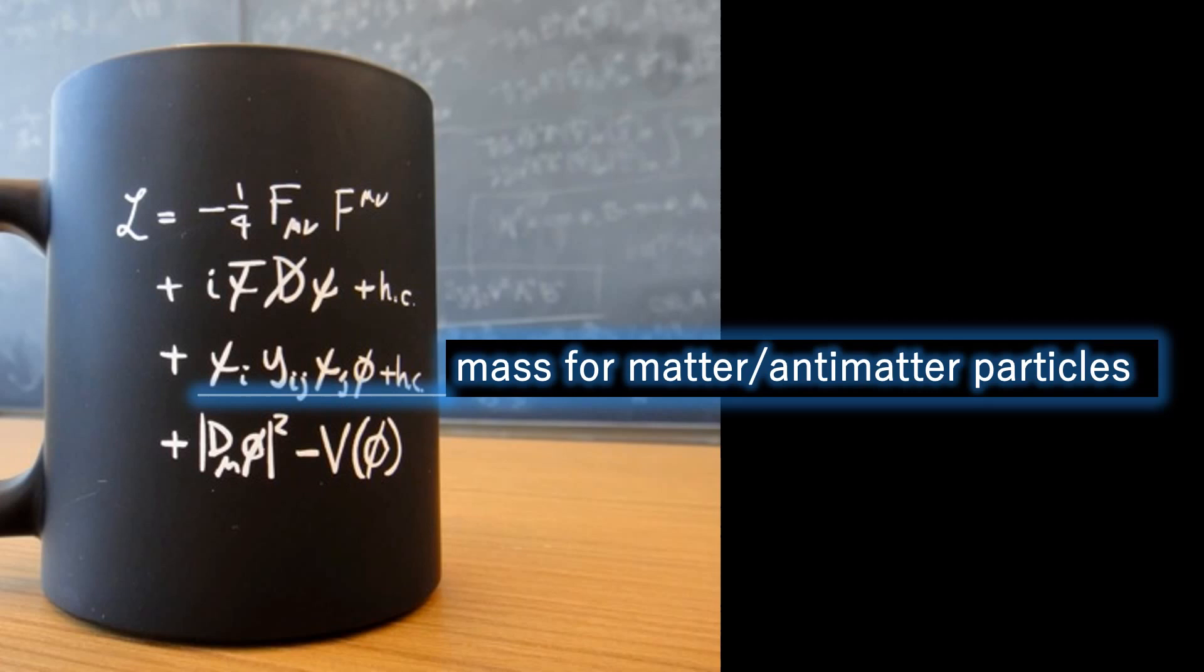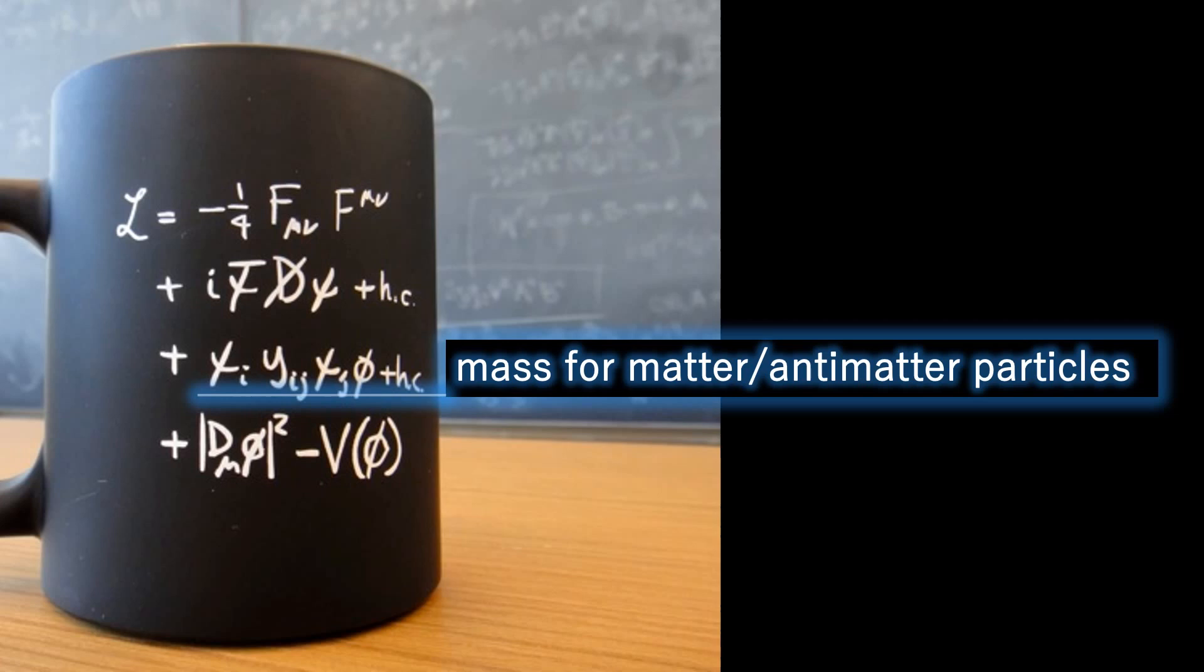These parameters are not predicted by theory but have been determined experimentally. This term describes how the interaction particles couple to the BEH field. This applies only to the interaction particles of the weak interaction, which thereby obtain their mass.